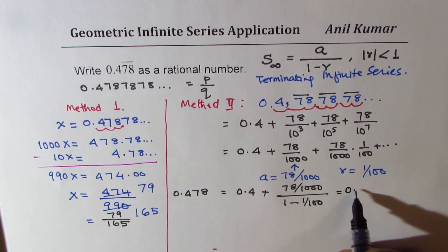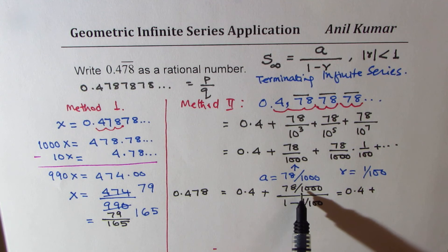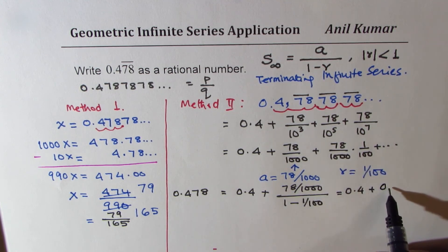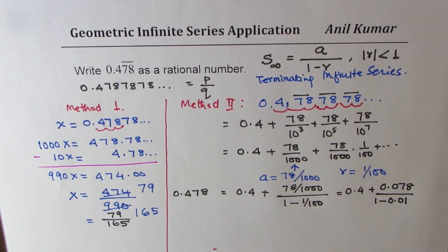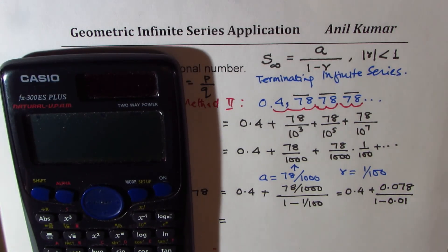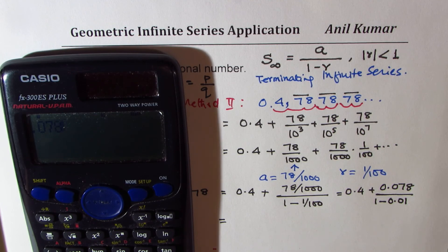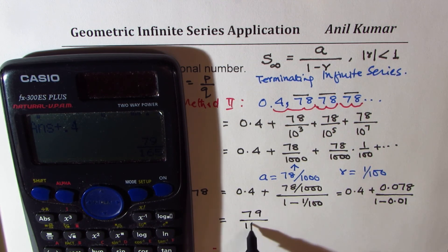Basically you have 0.4 plus 78 divided by 1000, which is 0.078, divided by 1 minus 0.01. We can use the calculator to find this answer. I'll do the fraction part first. 0.078 divided by, within brackets, 1 minus 0.01, bracket close, equal to, and to this fraction we'll add 0.4. That gives you 79 over 165.